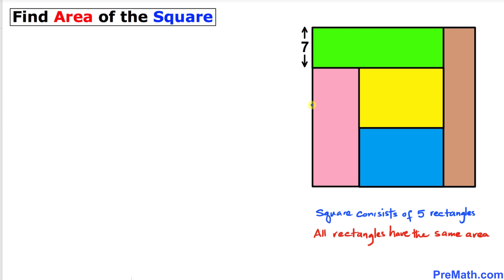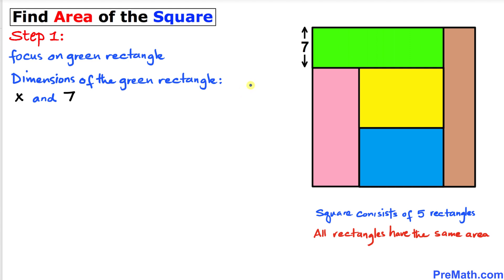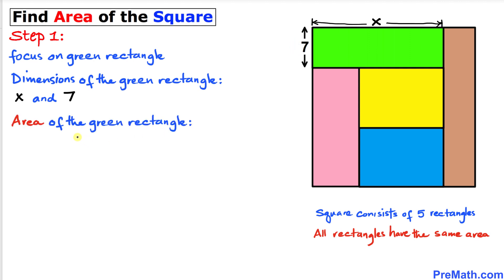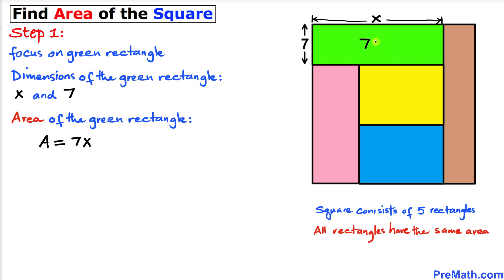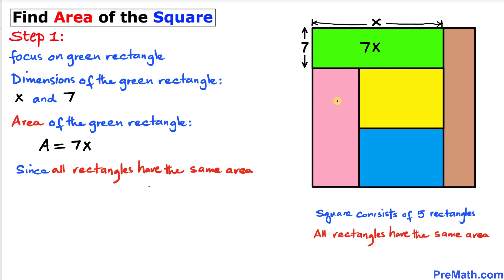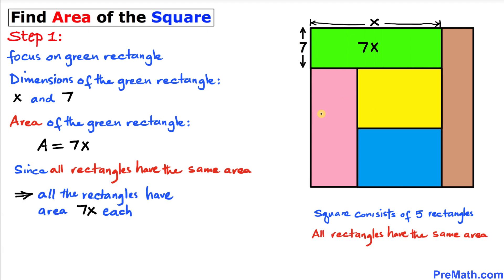Let's get started with the solution. Let's focus on this green rectangle and assume that its dimensions are x units on one side and seven units on the other. Recalling the area of a rectangle formula — area equals length times width — the area of this green rectangle is seven times x, or 7x. Since all rectangles have the same area, all five rectangles each have area 7x.